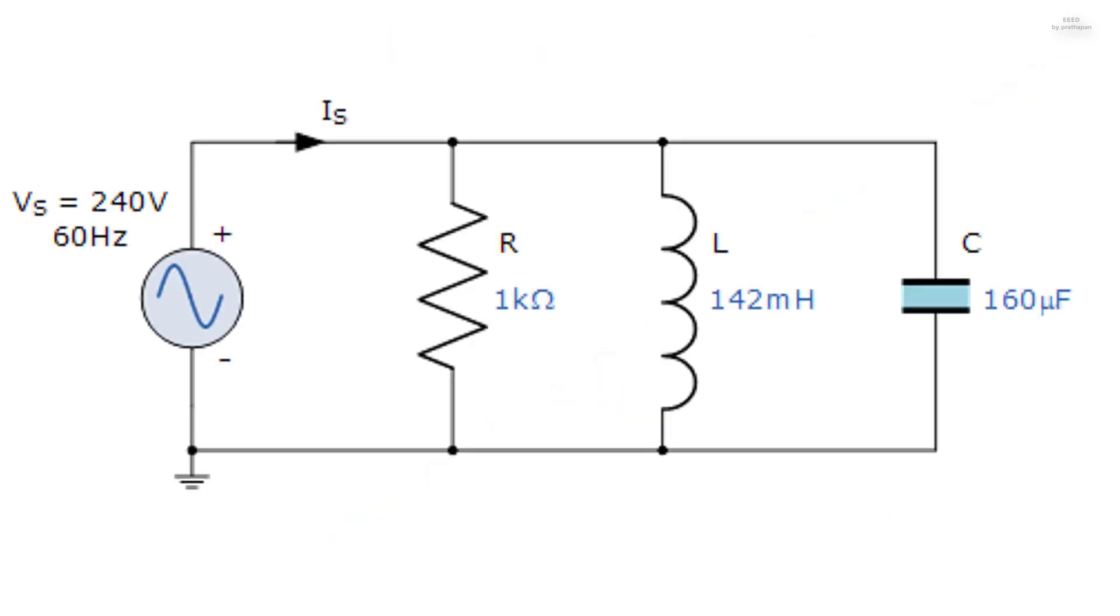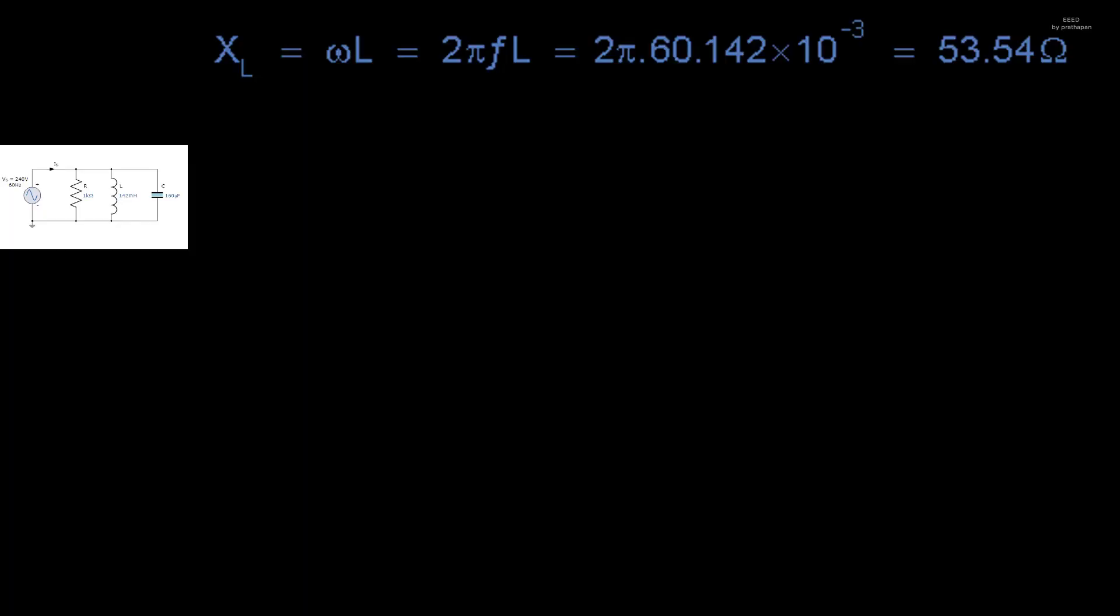Parallel RLC circuit example: A 1K Omega resistor, a 142mH coil and a 160μF capacitor are all connected in parallel across a 240V 60Hz supply. Calculate the impedance of the parallel RLC circuit and the current drawn from the supply.